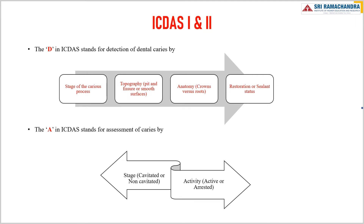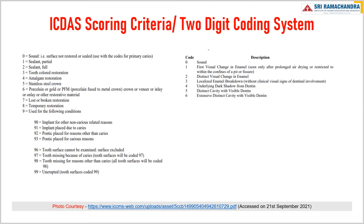In ICDAS-1 and 2, the D in ICDAS stands for detection of dental caries by the stage of the caries process, topography (pit and fissure or smooth surfaces), anatomy (crown versus roots), and restoration or sealant status. The A in ICDAS stands for assessment of caries by stage — either cavitated or non-cavitated — and activity, either active or arrested. ICDAS scoring criteria use a two-digit coding system. A two-number coding system is suggested to identify the restoration or sealants with the first digit followed by the appropriate caries score as the second digit.